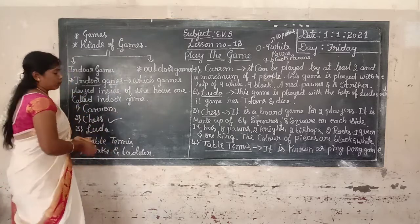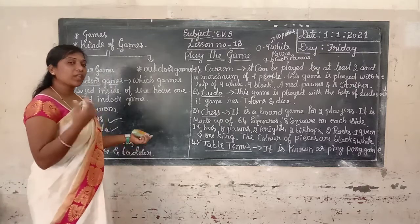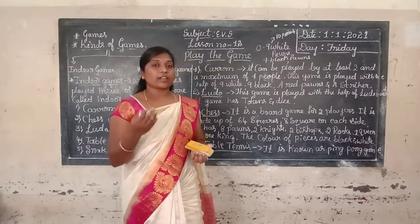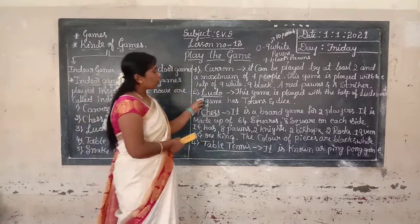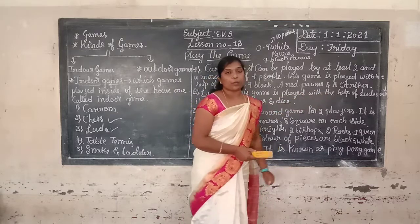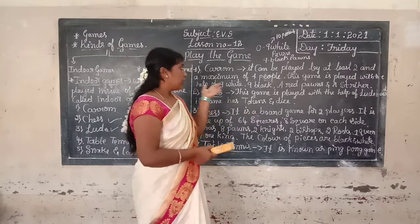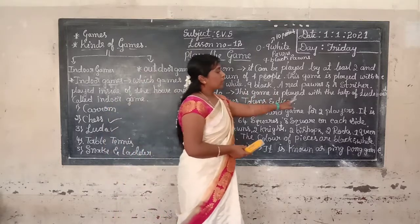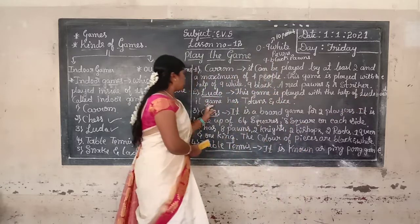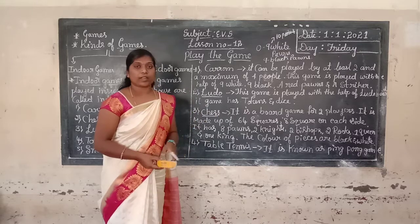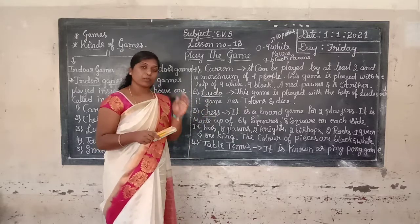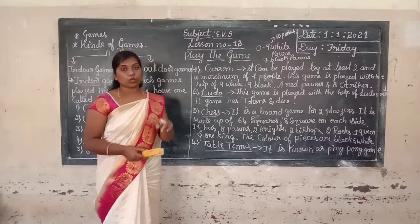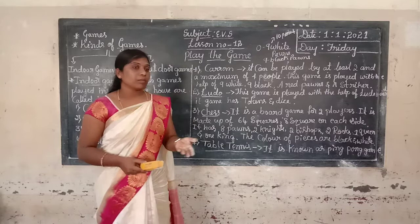Next we go to ludo. You have also played this game. Ludo is played with the help of a ludo board. It is a square type of board and it has tokens and a dice. At least two and a maximum of four members can play this game at a time.